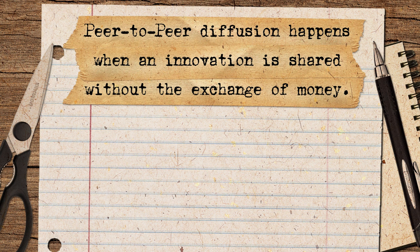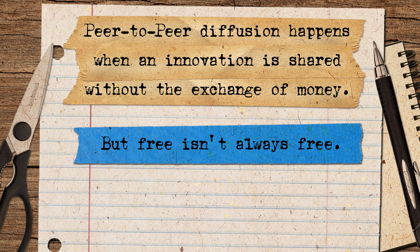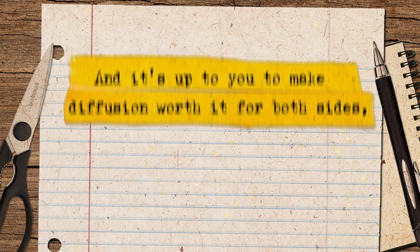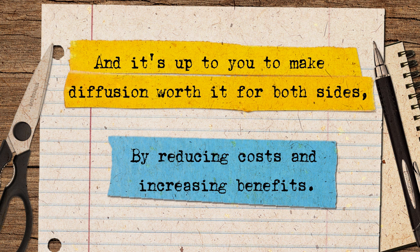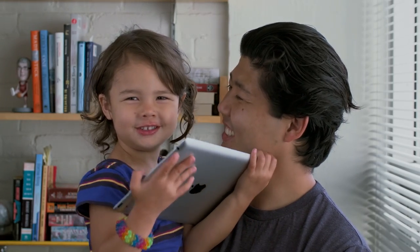So, what did we learn today? Peer-to-peer diffusion happens when an innovation is shared without the exchange of money. But free isn't always free — adopters and innovators both have costs. It's up to you to make diffusion worth it for both sides by reducing costs and increasing benefits. Users benefit from their own innovations, but if society is going to benefit as a whole, those innovations have to get out to others. Peer-to-peer diffusion is everywhere, and how to do it is something very important for user innovators to learn. So the question is: how will you share your solution?